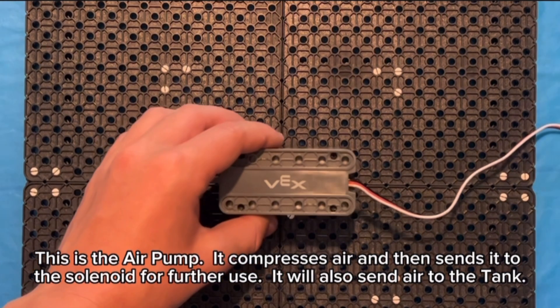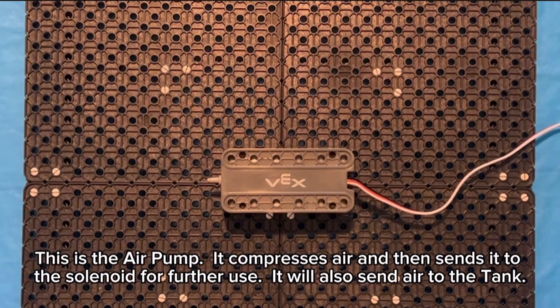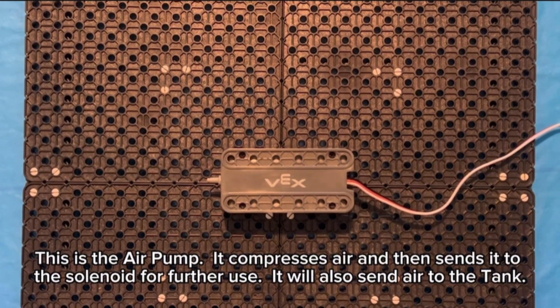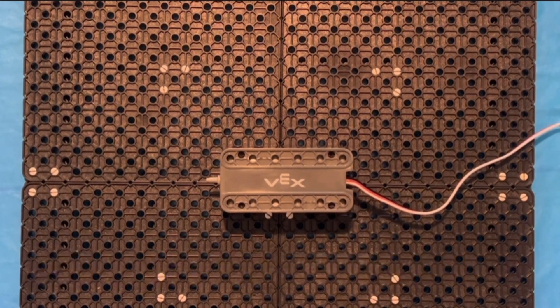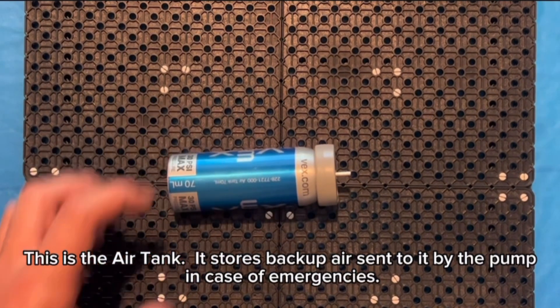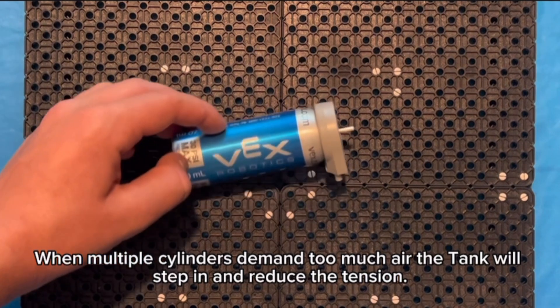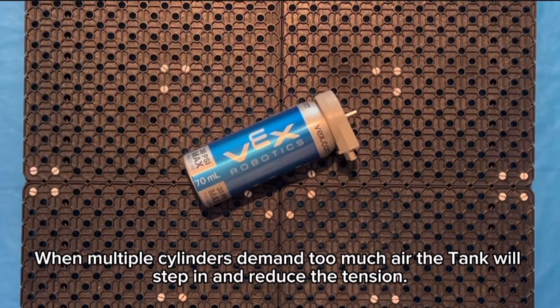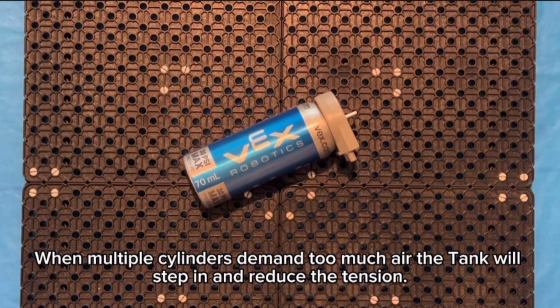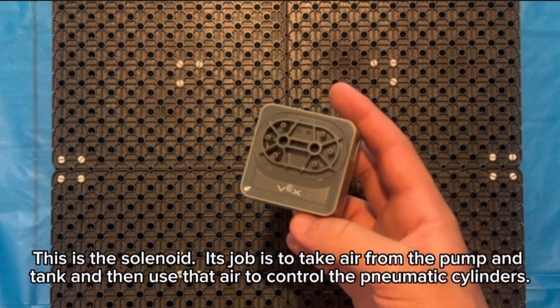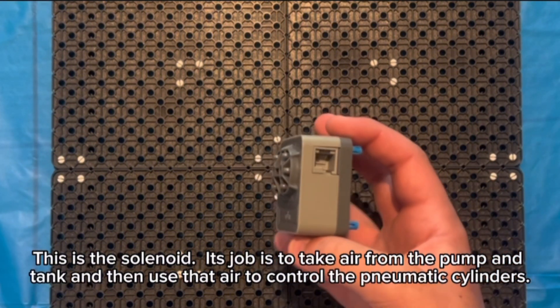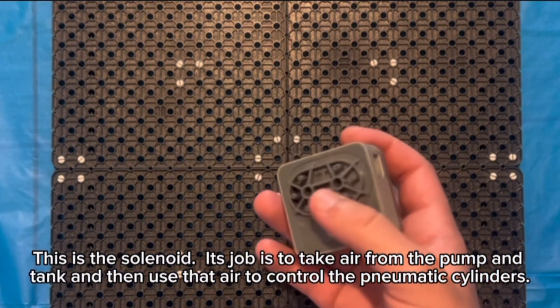This is the air pump. It compresses air and then sends it to the solenoid for further use. It will also send air to the tank. This is the air tank. It stores backup air sent to it by the pump in case of emergencies. When multiple cylinders demand too much air, the tank will step in and reduce the tension. This is the solenoid. Its job is to take air from the pump and tank and then use that air to control the pneumatic cylinders.